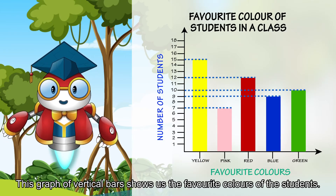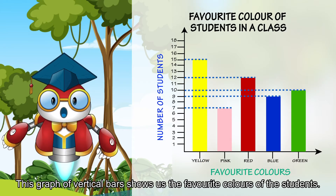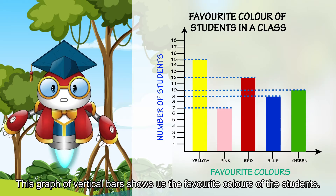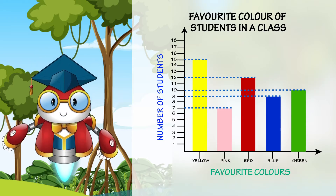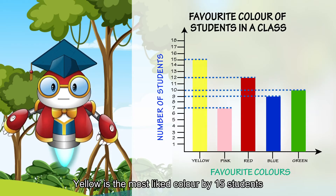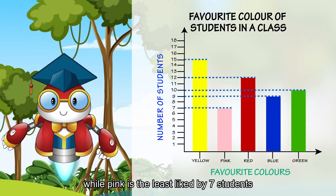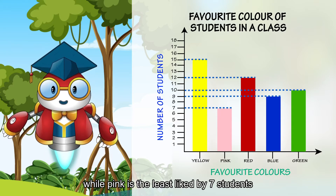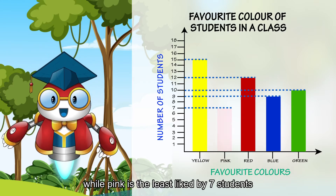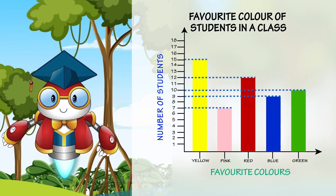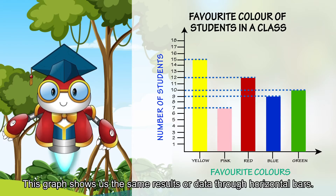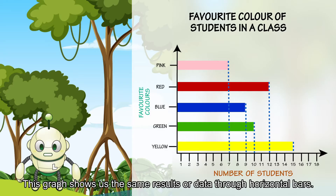This graph of vertical bars shows us the favorite colors of the students. Yellow is the most liked color by 15 students, while pink is the least liked by 7 students. This graph shows us the same results or data through horizontal bars.